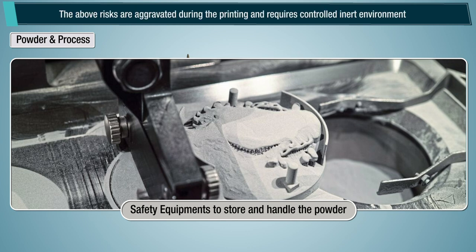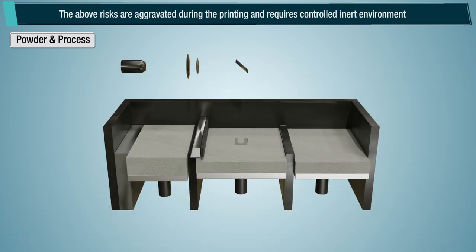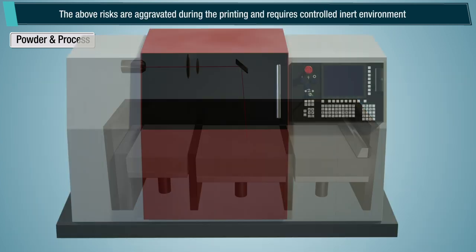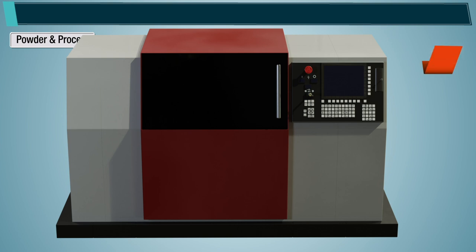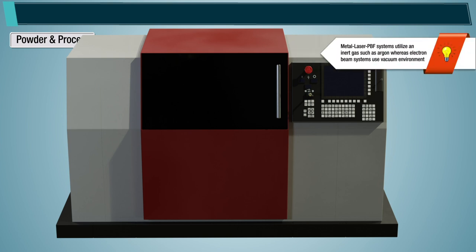The above risks are aggravated during printing and require a controlled inert environment. Metal laser powder bed fusion systems utilize an inert gas such as argon, whereas electron beam systems use a vacuum environment.